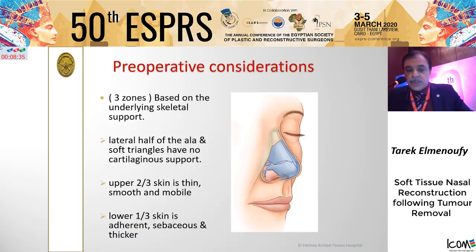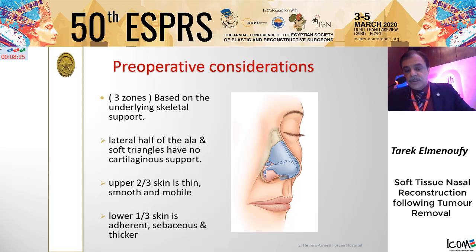For preoperative consideration, we should remember that we have three zones based on the underlying skeletal support. The lateral half of the alar and soft tissue triangle have no cartilaginous support, and the skin of the upper two-thirds of the nose is thin, smooth and mobile, while the lower third is adherent, sebaceous and thicker.